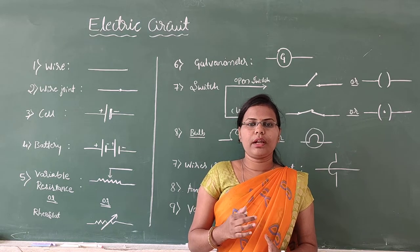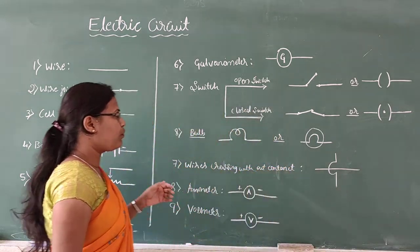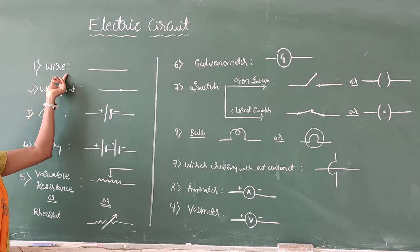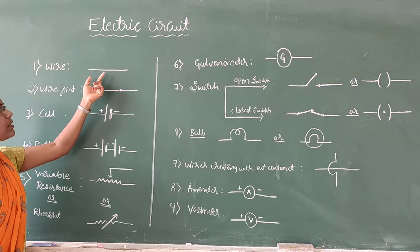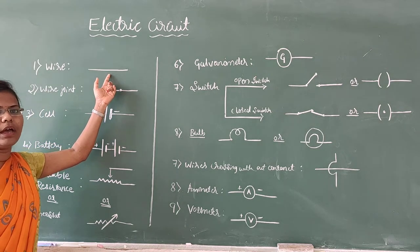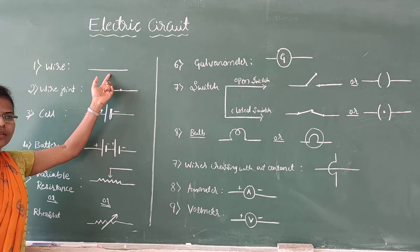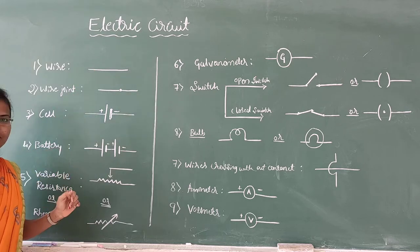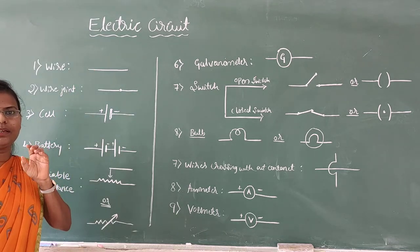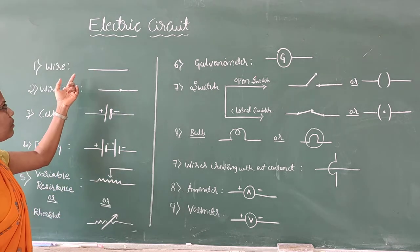Let us see them one by one. The first symbol is for a wire. This is the symbol for an electric wire. A wire is a flexible conducting conductor.